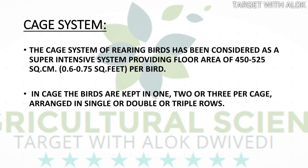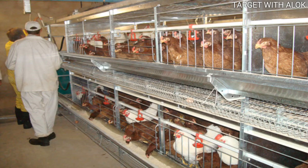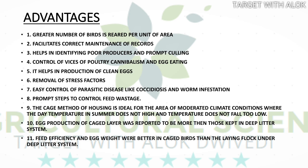Three birds is the maximum number that can be kept in a cage. The cages are arranged in rows. This is how the cages are built and how the birds are arranged in them.